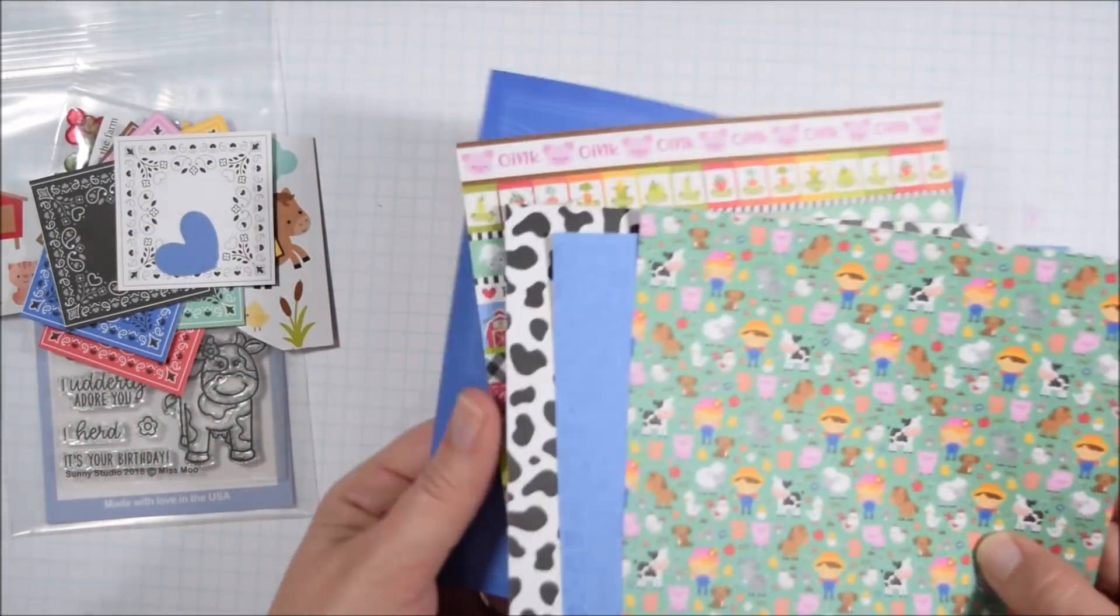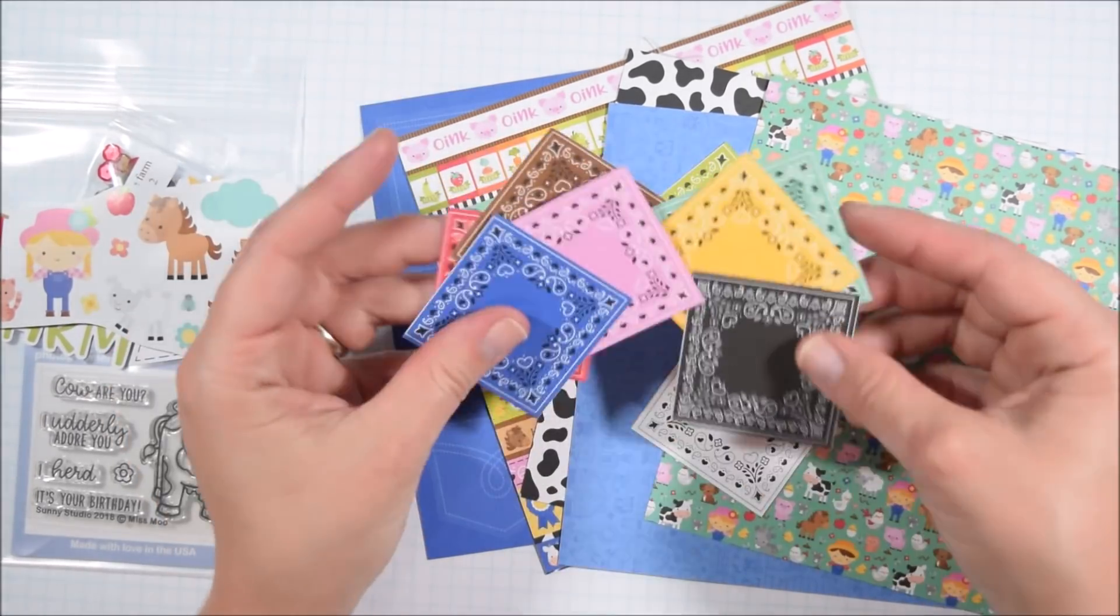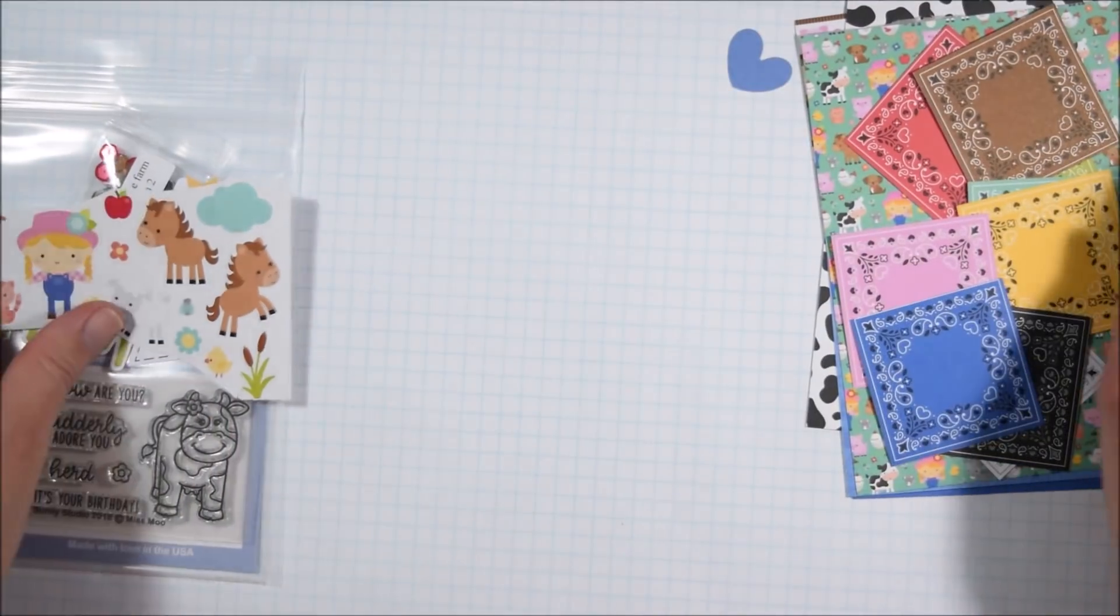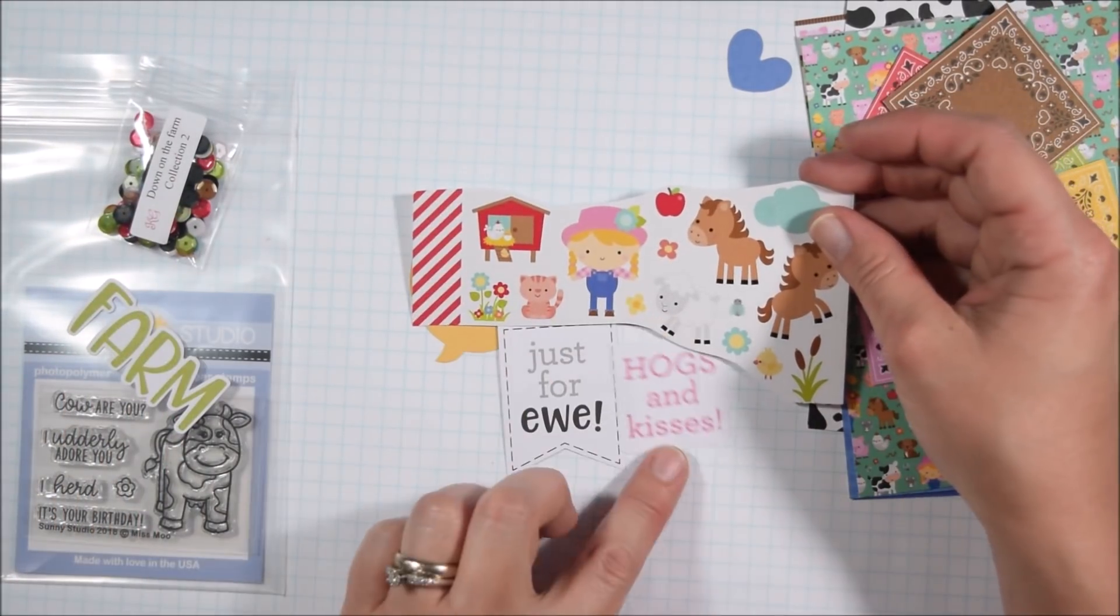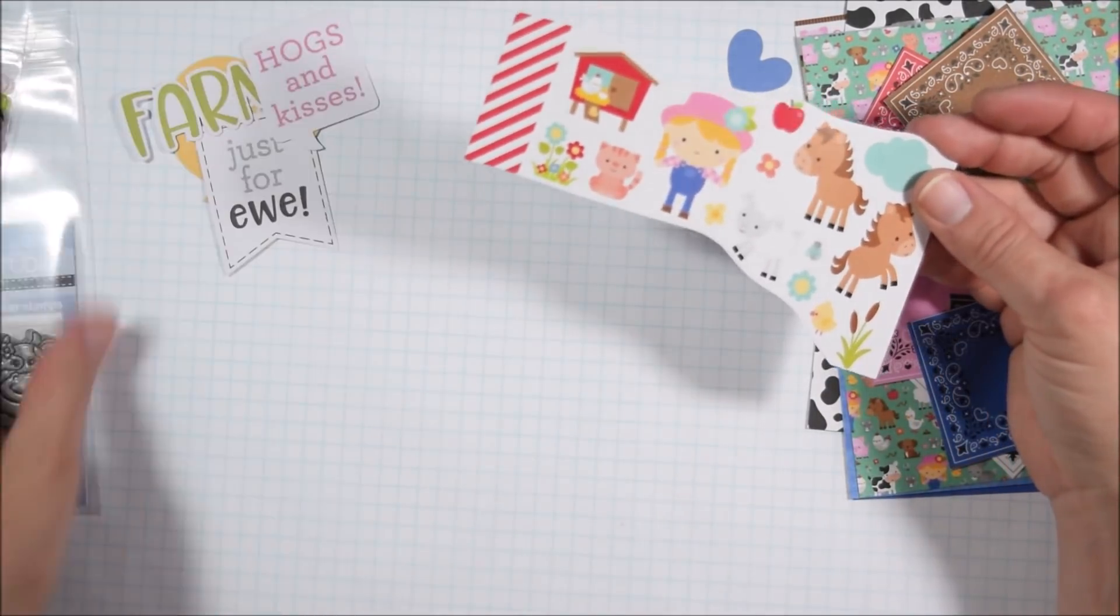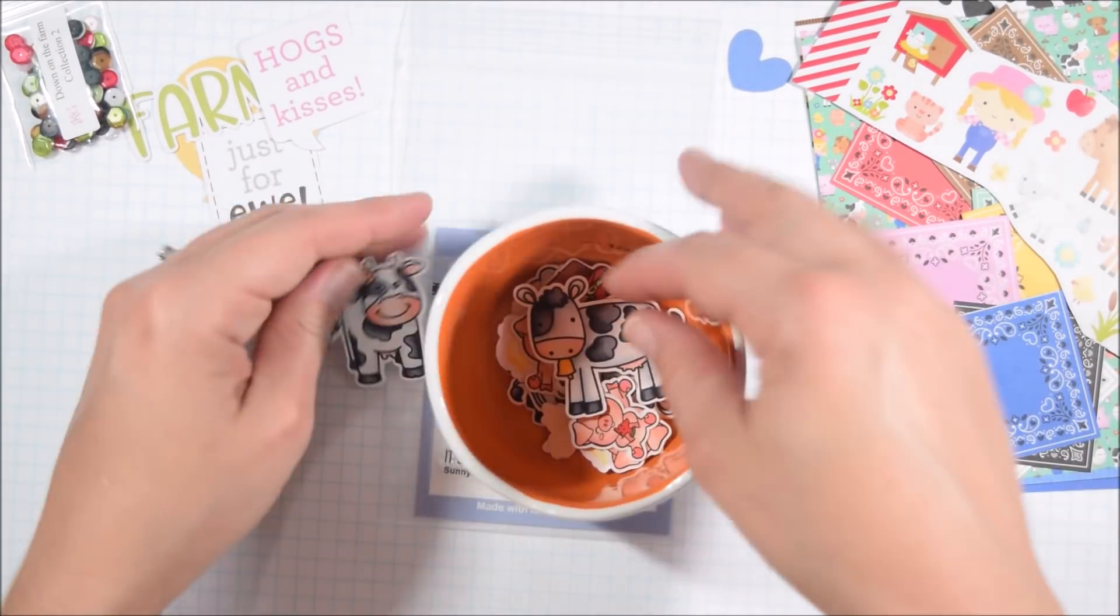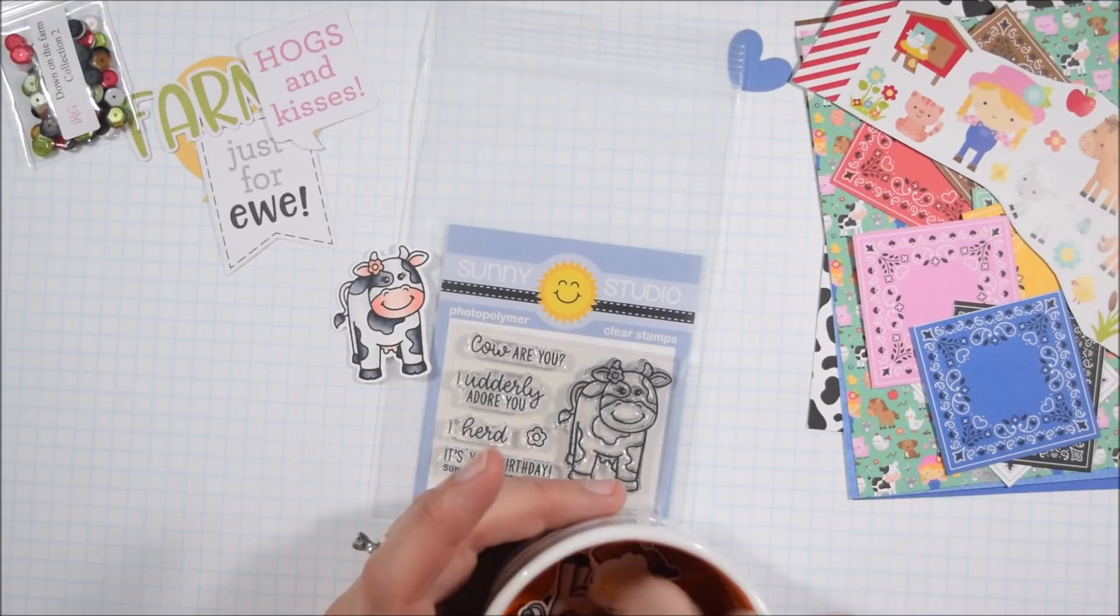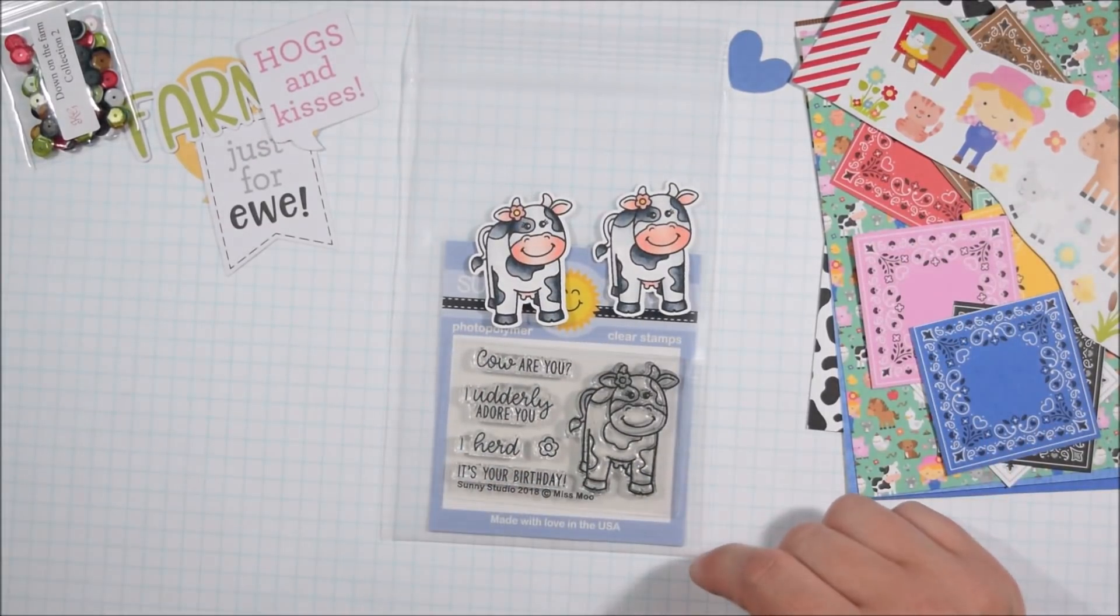I introduced the card kit and showed the contents in more detail in a separate video so you can check that out if you want to see that. But I am just going to go through the different collections as I create my cards. There actually are more than 10 cards in this video and there will be an accompanying blog post where I will give you a few more details on the cards and you can just look at still pictures as kind of the main focus there.